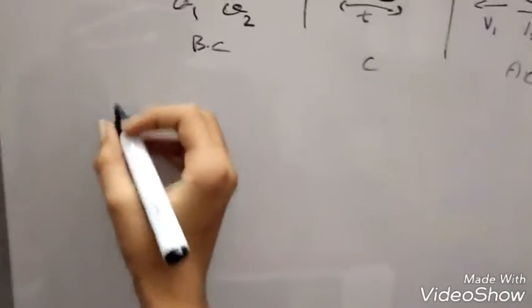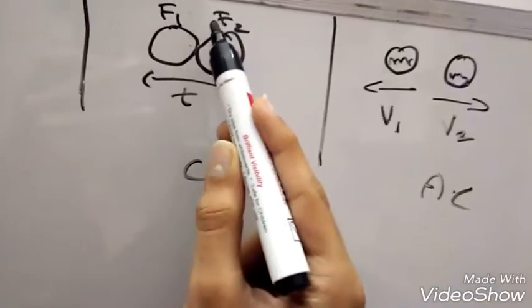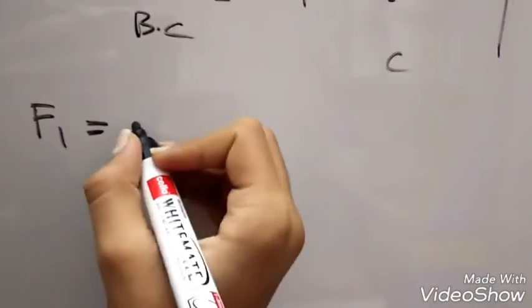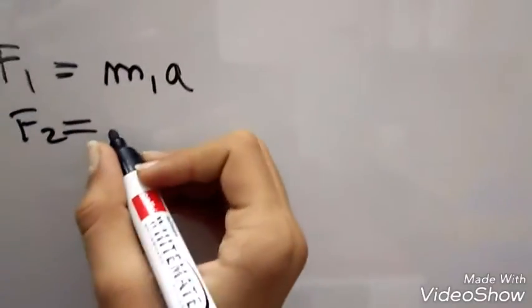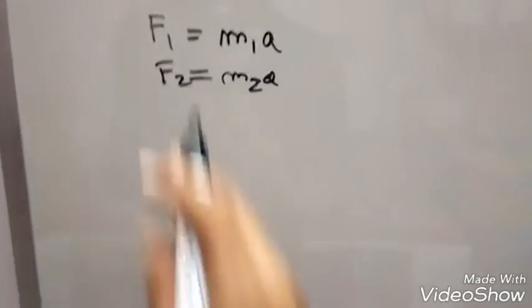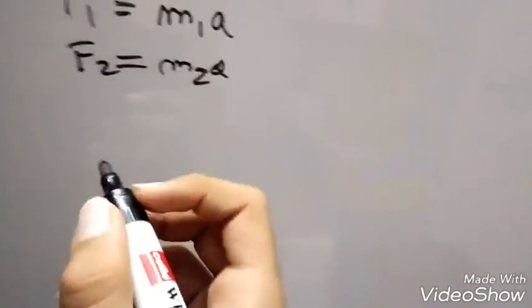According to Newton's second law, F equals mA. In the collision part, the collision takes place over time. Forces are applied on each side: F1 equals m1a and F2 equals m2a. This is the formula of force according to Newton's second law.